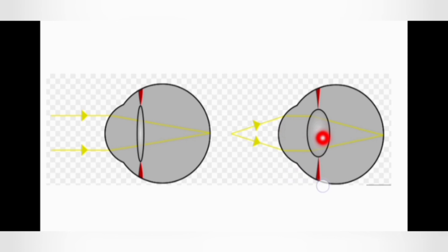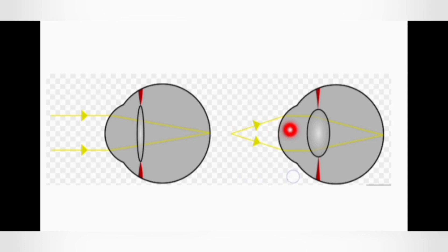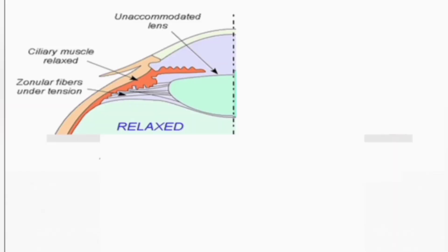Note the change in the shape of the lens — the lens has become more globular, thickened, or convex so that the light rays can focus on the retina. If the lens had not acquired this globular or convex shape, the light rays coming from the near object would have focused behind the retina. So by the process of accommodation, the light rays coming from a near object are now perfectly focusing on the retina rather than behind it.